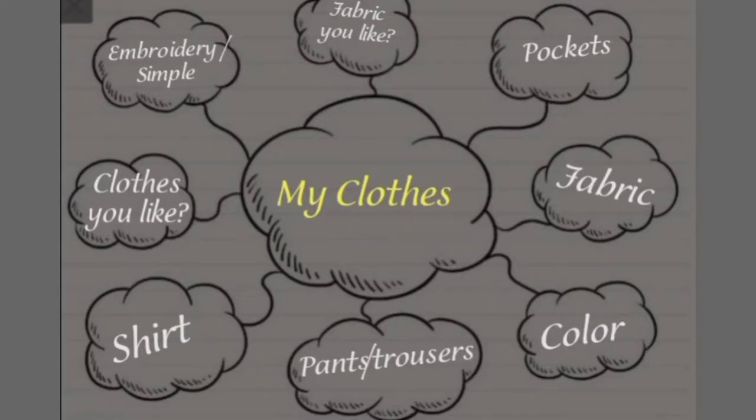Now open your creative writing copy and maintain your page. We have to do two creative writings today. The first topic is 'My Clothes.' What are clothes? Clothes means kapde. Start today — make a web at the center. Write the heading 'My Clothes.' What are you wearing today? You can write pant, shirt, and trouser. If you are a girl, write whatever you are wearing. What is the color of your clothes? Do you have pockets in your clothes?